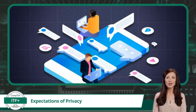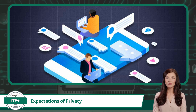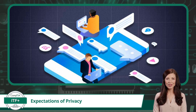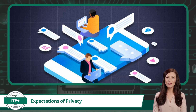Instant messaging, another staple in our daily communication, has its nuances when it comes to privacy too. Many contemporary messaging apps boast end-to-end encryption, ensuring the sanctity of the conversation between the sender and recipient. However, some residual data, like timestamps or participant details, might still be stored. Additionally, even if a message is purged, it could linger in backups. Some platforms also facilitate message backups on third-party cloud services, which might lack encryption.